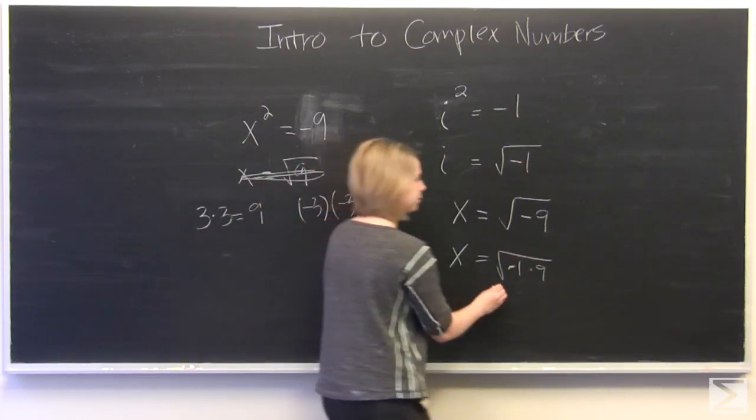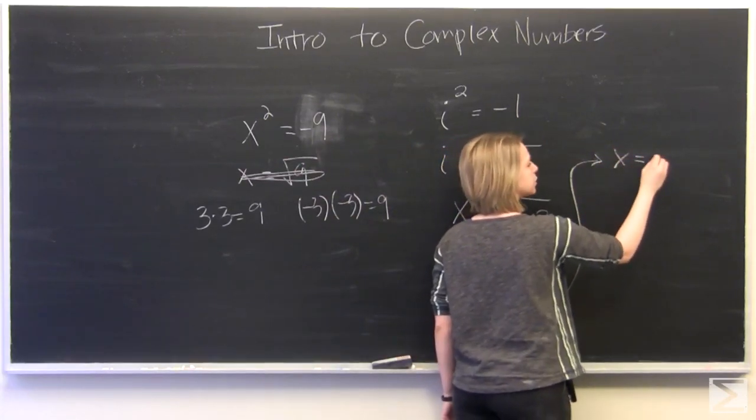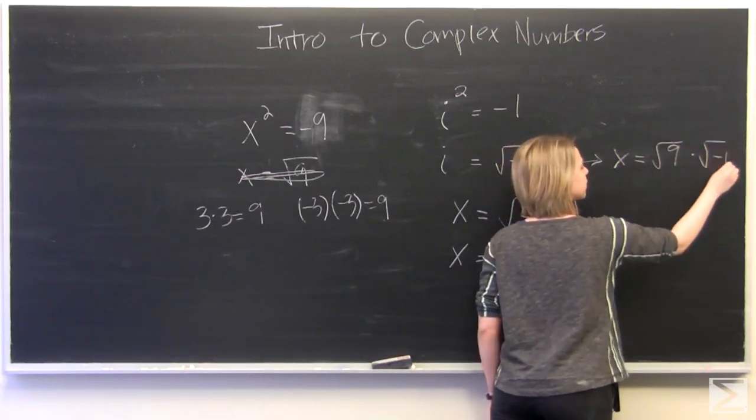And at this point, we can split the radical. x is equal to the square root of 9 times the square root of negative 1.